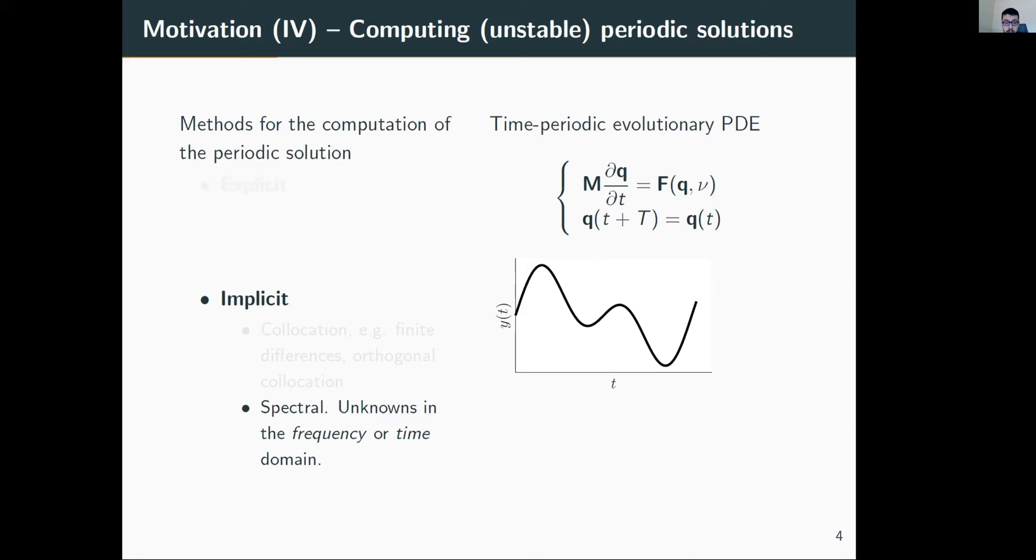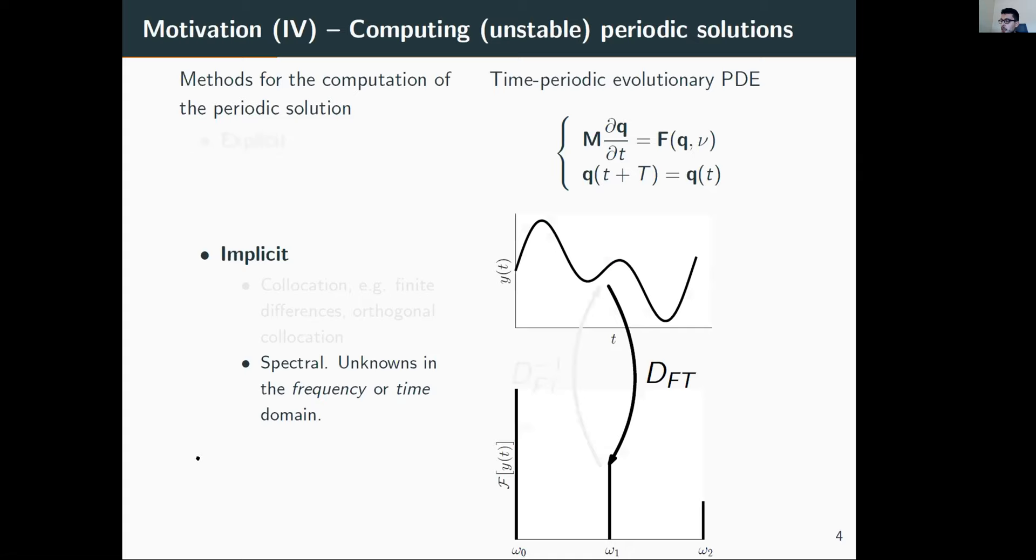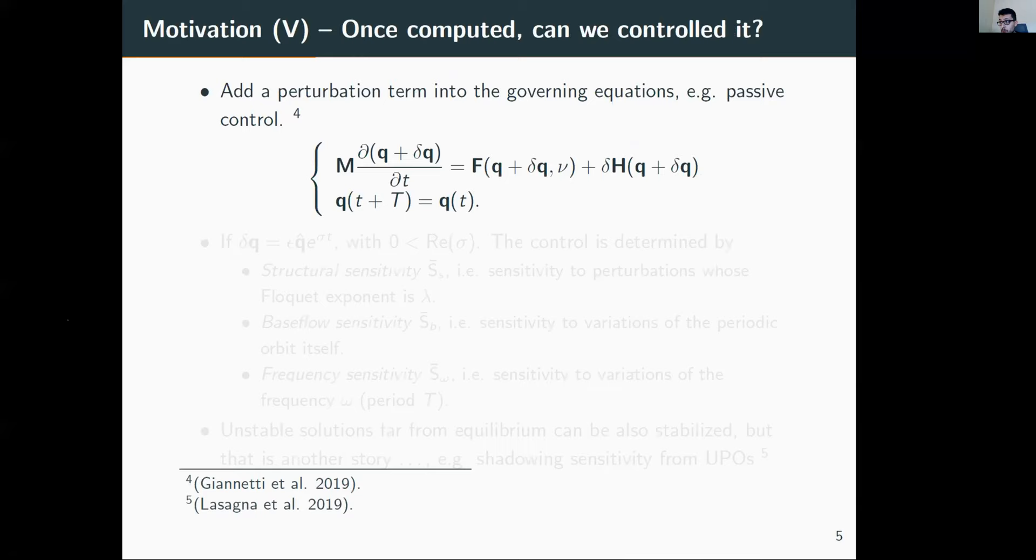The method we'll focus on is the spectral family. Among them, we distinguish frequency-time methods depending on whether you solve in frequency or time domain. These methods use successive Fourier transforms and inverses. They're of interest because they are inherently periodic, the time derivative is easy to evaluate in frequency domain, and they have spectral convergence.